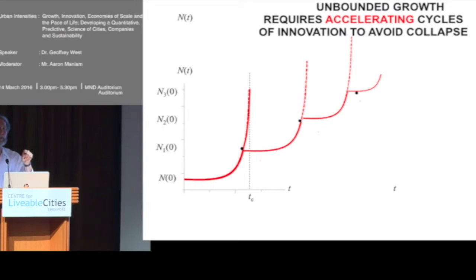So each one of those major innovations resets the clock. So it tells you how you can avoid collapse. You're going along this curve, life is getting faster, and you would collapse. So somewhere along there, you better reset the clock by inventing computers or whatever. And that means that you would start again and go on.